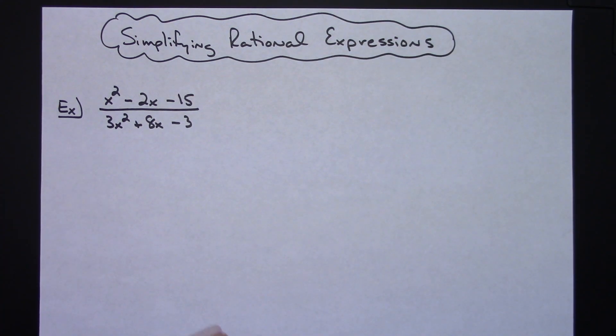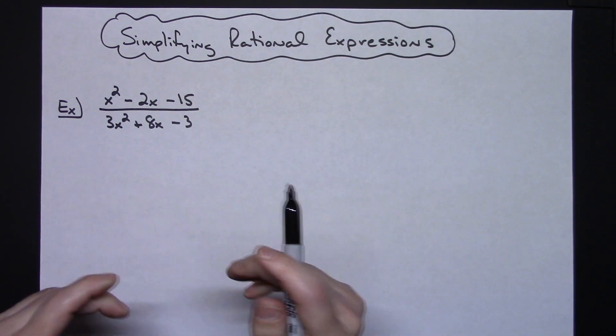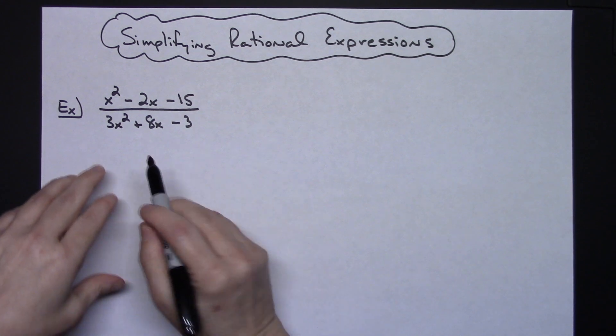And then basically all other types of factoring like the difference of two squares, taking out the greatest common factor. At this point if you are trying to simplify rational expressions you have to know how to factor.